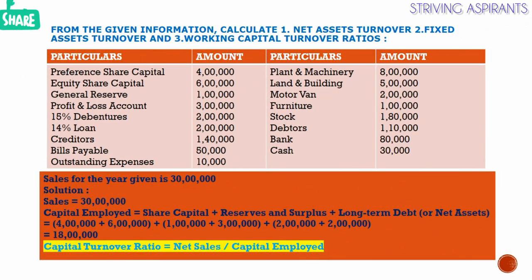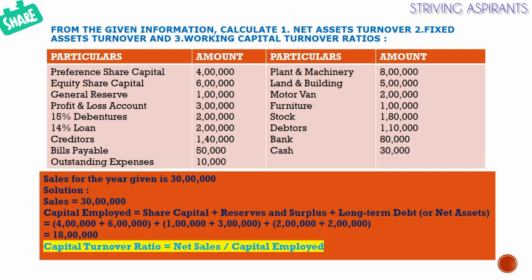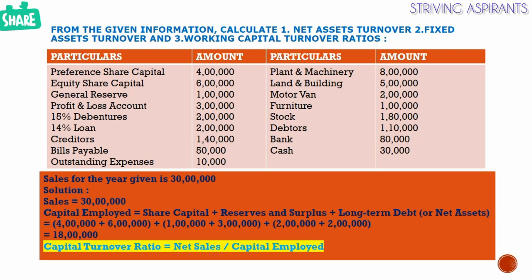Now we will check the balance sheet extract given here. On the liability side: preference share capital 4 lakh, equity share capital 6 lakh, general reserve 1 lakh, profit and loss account 3 lakh, 15% debentures 2 lakh, 14% loan 2 lakh, creditors 1 lakh 40,000, bills payable 50,000, outstanding expenses 10,000. On the asset side: plant and machinery 8 lakh, land and building 5 lakh, motor vehicle 2 lakh, furniture 1 lakh, stock 1 lakh 80,000, debtors 1 lakh 10,000, bank 80,000, cash 30,000. Sales value given is 30 lakh.